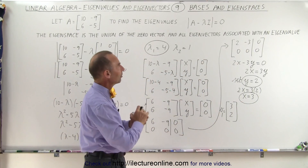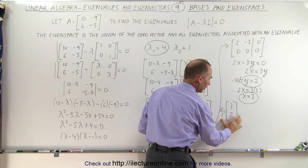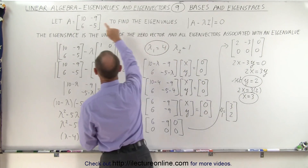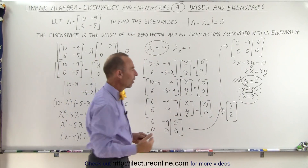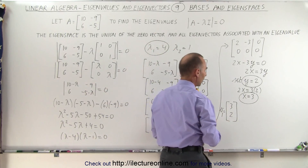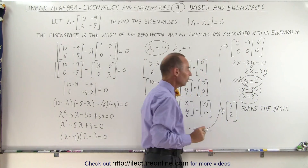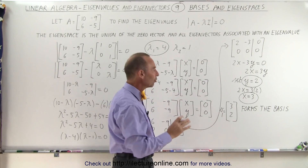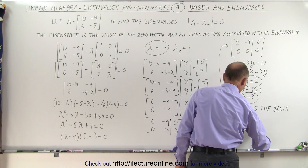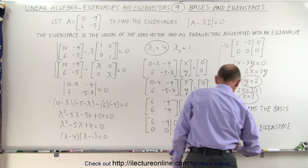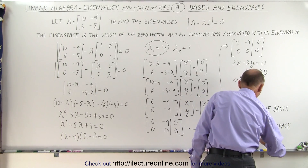Now, how does that relate to basis and eigenspaces? It turns out that this vector v₁, associated with this eigenvalue for this particular matrix, becomes the basis of this matrix. So v₁ forms the basis, and it also defines the eigenspace of the original matrix A and the associated eigenvalue.